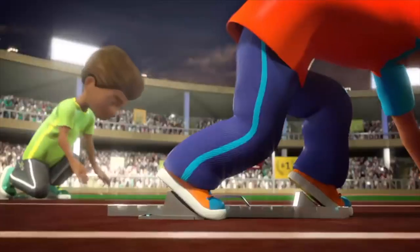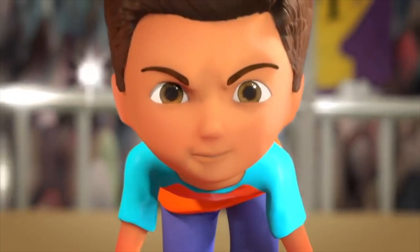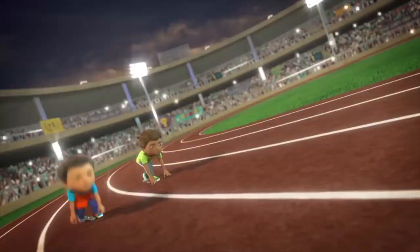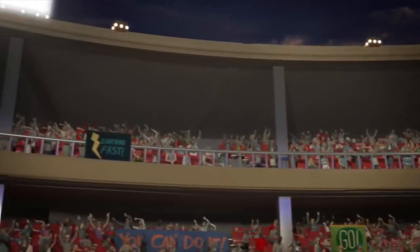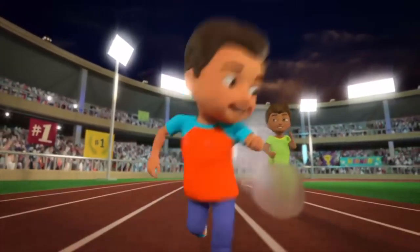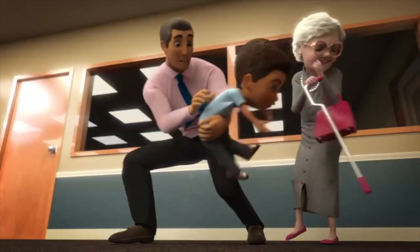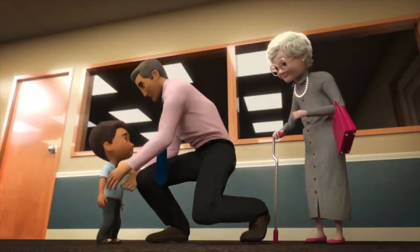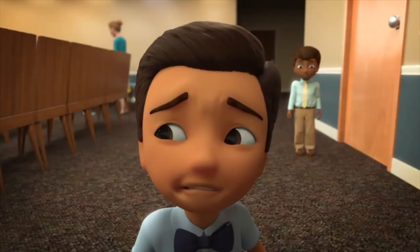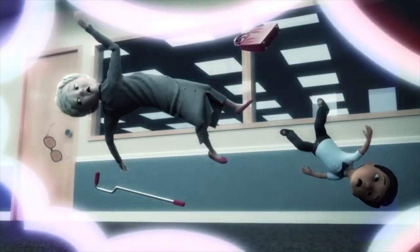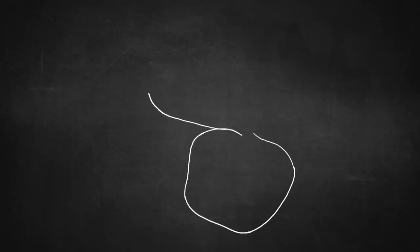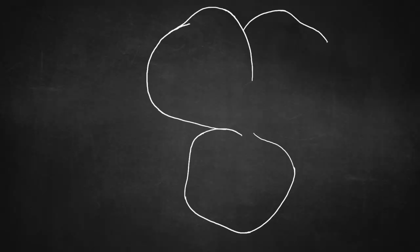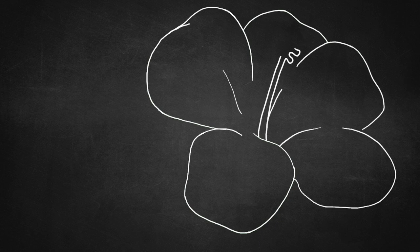On your mark! Get set! Whoa, Caleb! Do you know what could have happened? Yeah, it could have been bad. So they've given us a scenario where Caleb is running through the kingdom hall and almost nails sister Elsa. Let's see what kind of advice Jehovah's Witnesses provide.